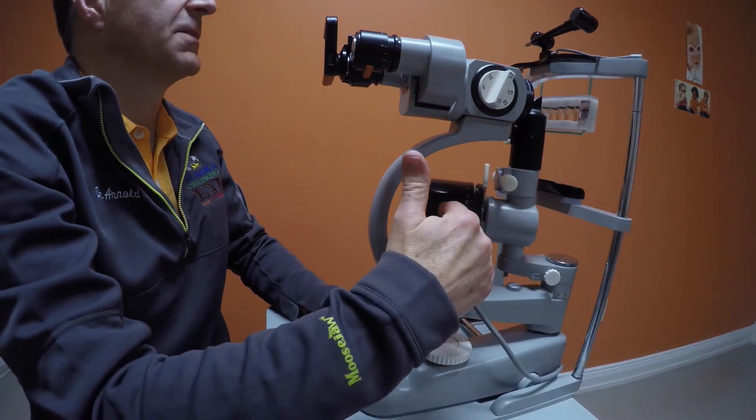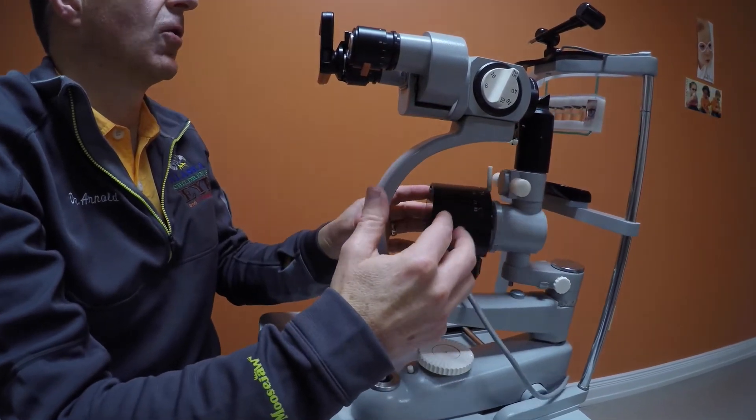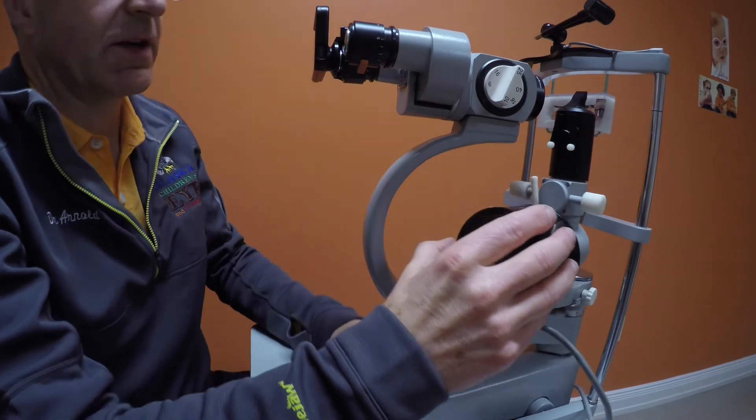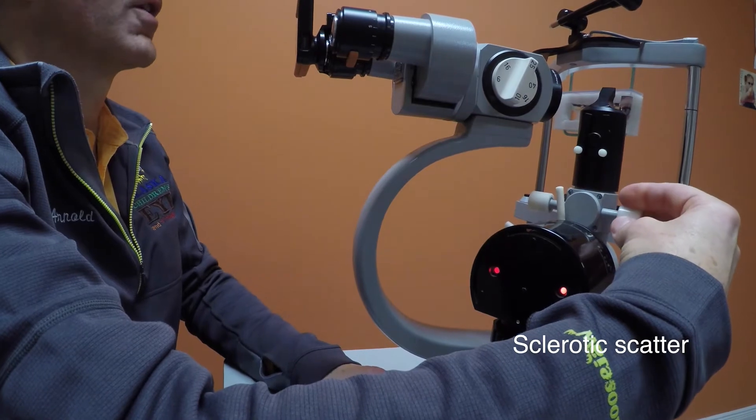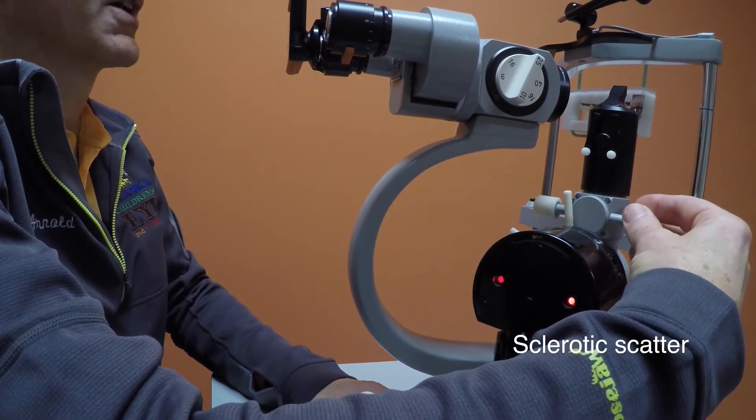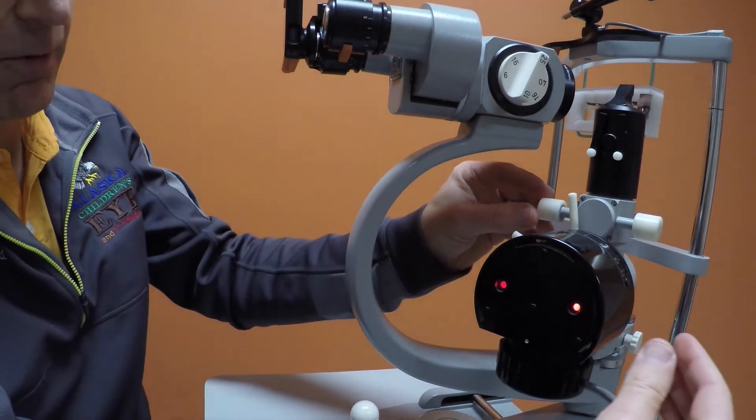We can have the beam come in from the left or we can have the beam come in from the right. The beam can be moved too far to the right or too far to the left, something that's called sclerotic scatter, but we want to keep that right in the middle.